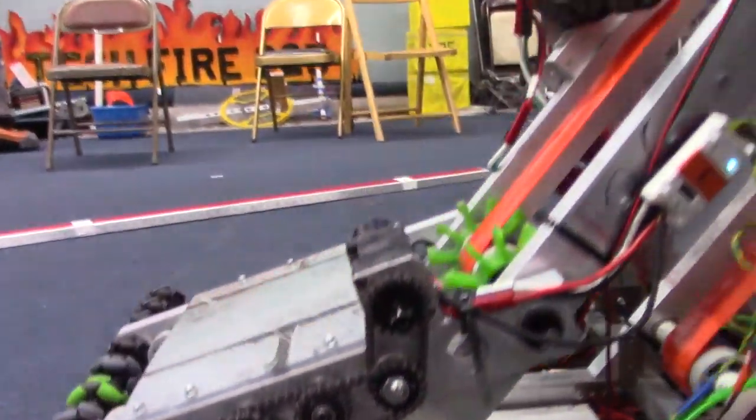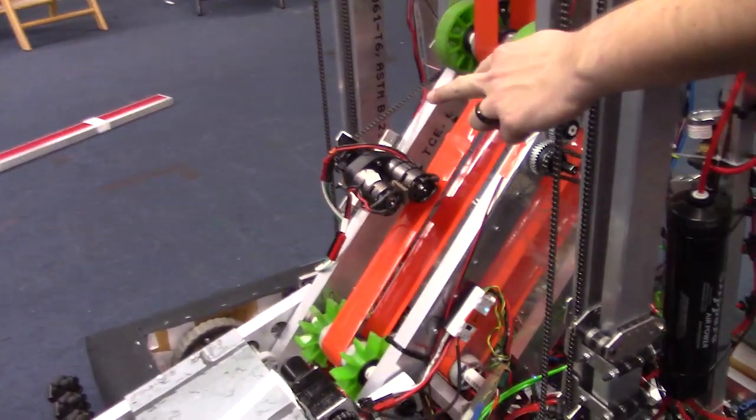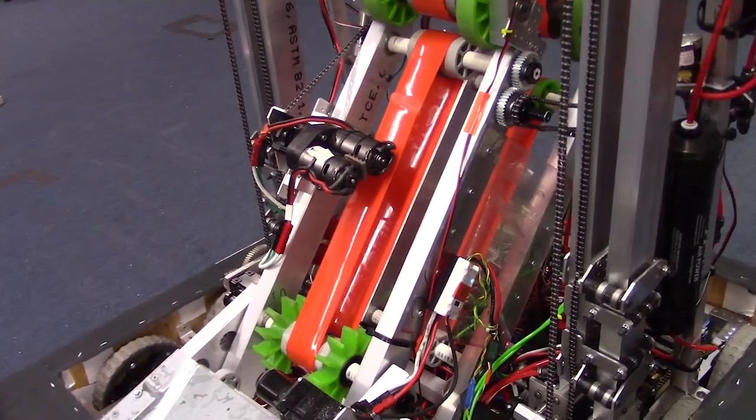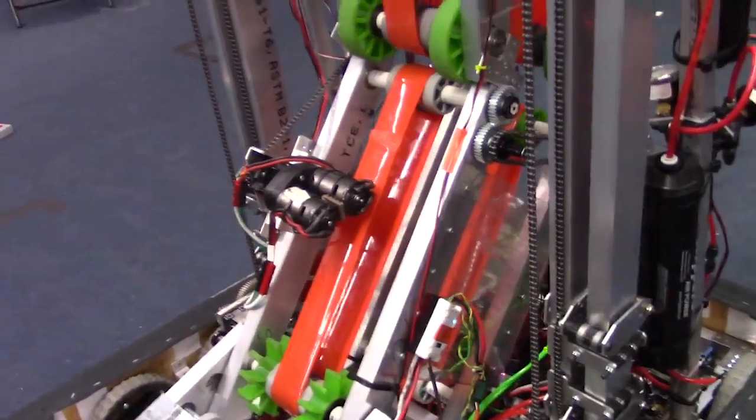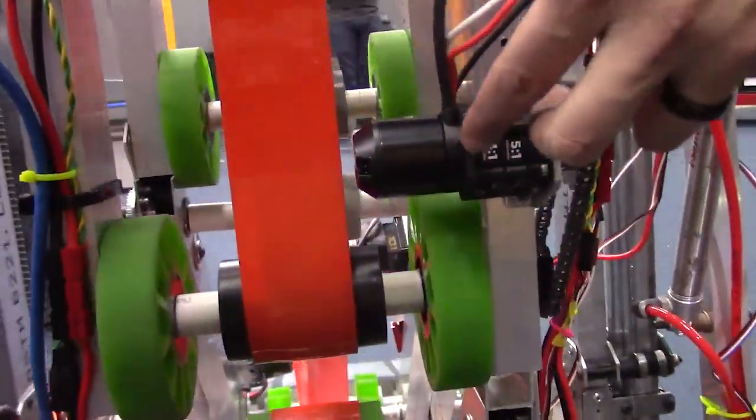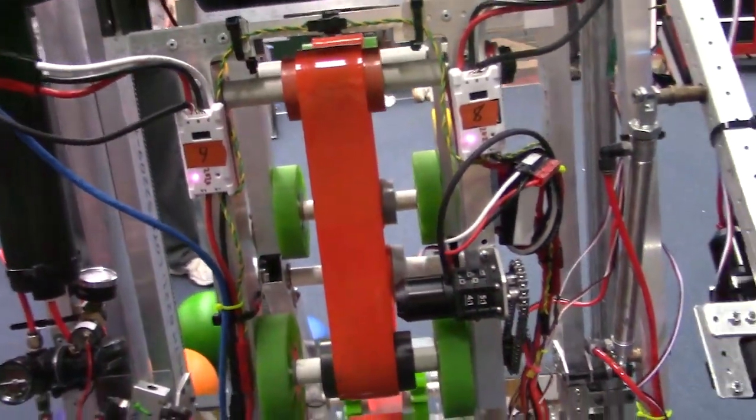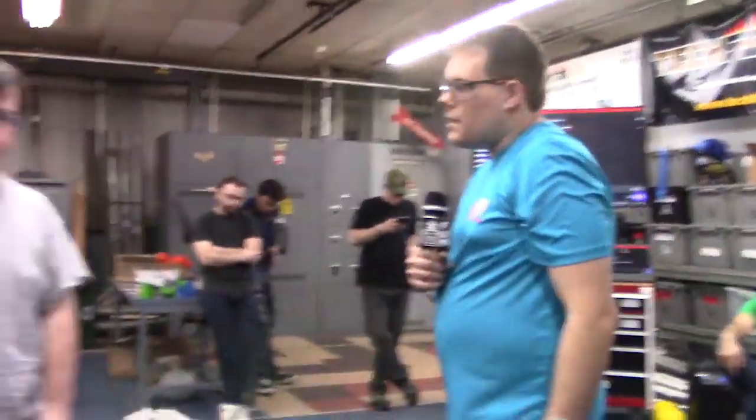The first stage of the indexer is powered by two 775 Pro motors right here. And the second stage is powered by a Neo 550 motor that happens to also be through an ultra-planetary gearbox for a super-compact solution. So I'm going to turn it over to Andrew to talk about how the controls work for the indexing.